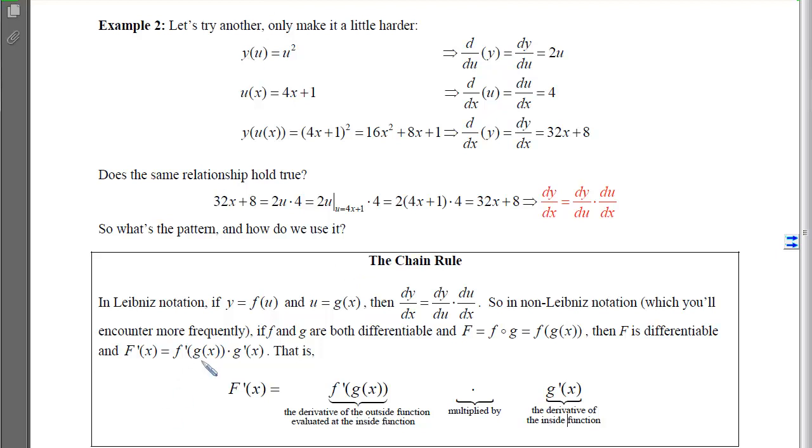then the derivative of that is going to be the derivative of f, that was the same as the derivative of our y, or our outer function, evaluated at the inner function unchanged. So here we have this 2u, which was the derivative of that inner function, and then we evaluated it at what that inner function equaled unchanged, and then we multiplied at the back times the derivative of that inner function. So capital F's derivative will be the derivative of the outer function, evaluated at the inner function unchanged, times the derivative of the inside function.